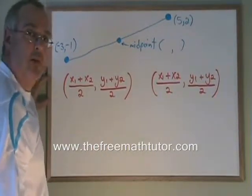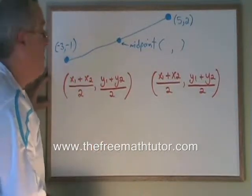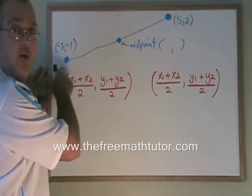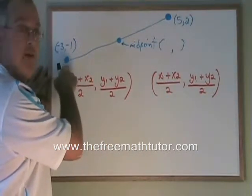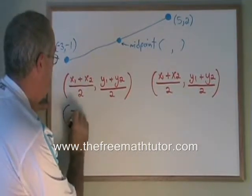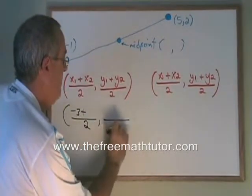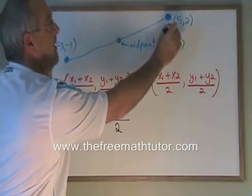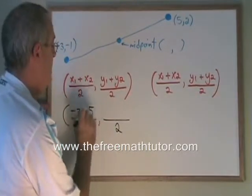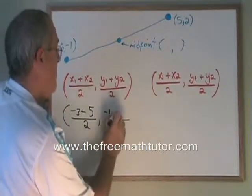We have to know which is our x1 and which is our x2, and that can be determined by figuring out which is our starting point. Since we're starting here in this example, our x1 is negative 3, and therefore our x2 is 5. Our y1 will be negative 1, and our y2 will be 2.